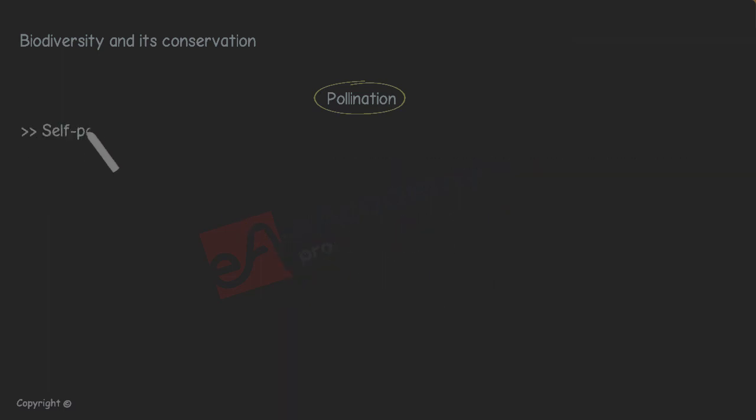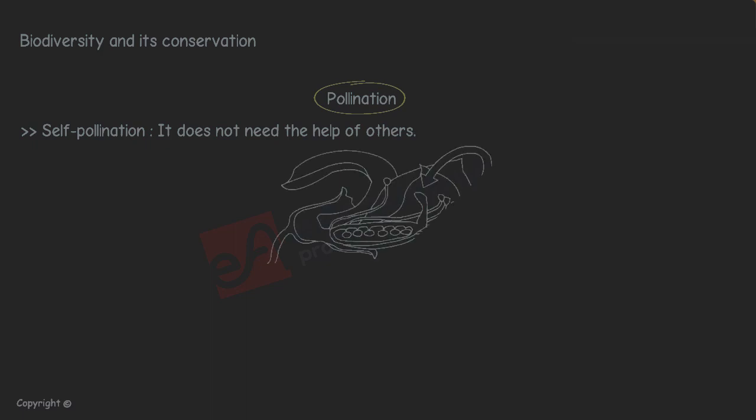Self-pollination. Self-pollination is a type of pollination that does not need the help of others. Pollen grains can transfer from the stamen to the pistil by itself. These plants are fertile on their own, although you will find only a few plants that have this characteristic.